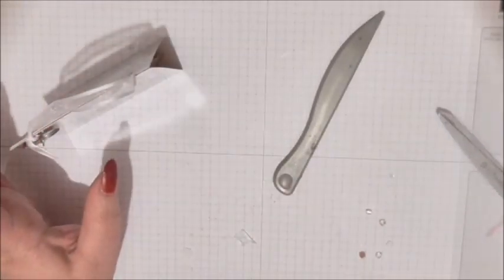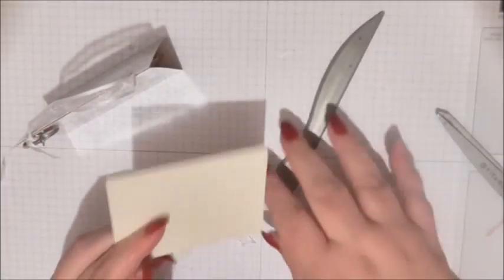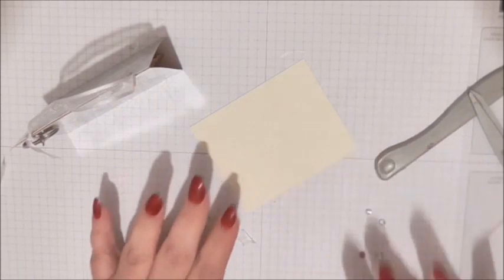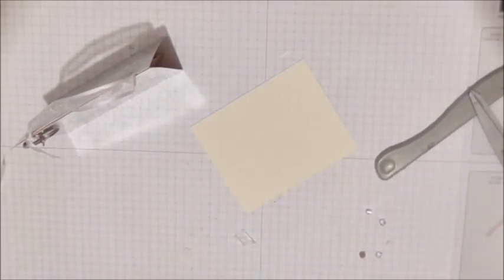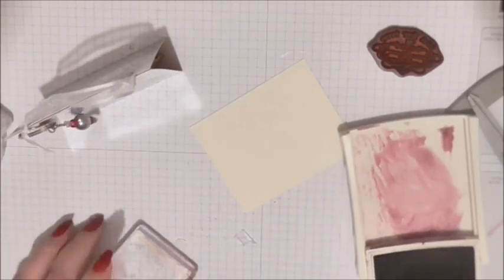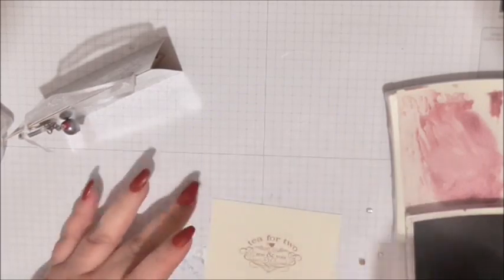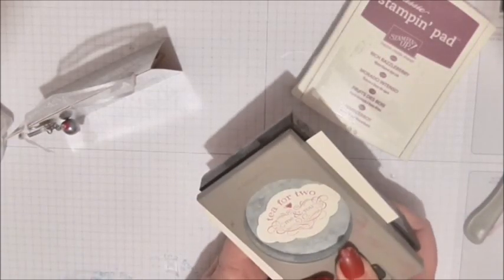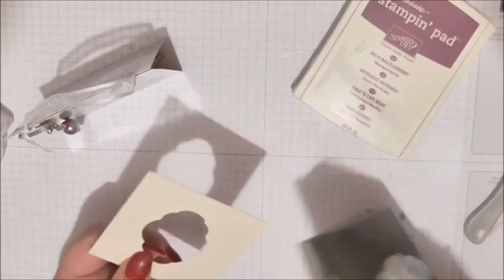I'm going to use a piece of card and stamp it with Rich Razzleberry to bring out the pink in there. The T for Two stamp - T for two, me and you. Fits beautifully in the pretty label punch.